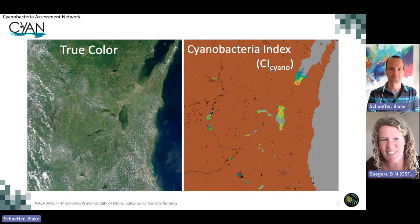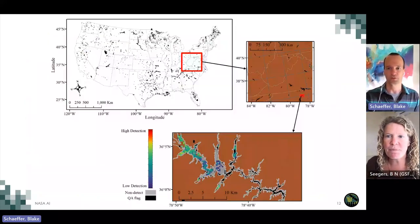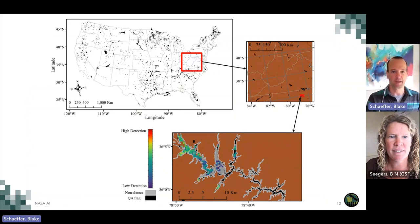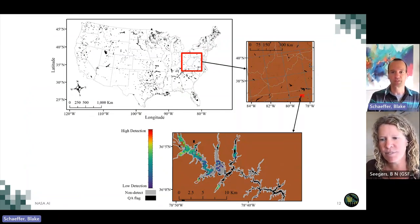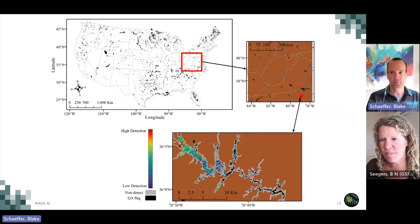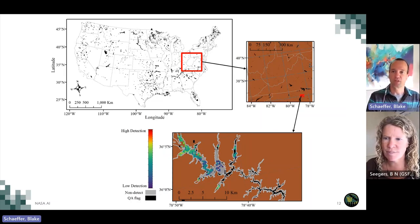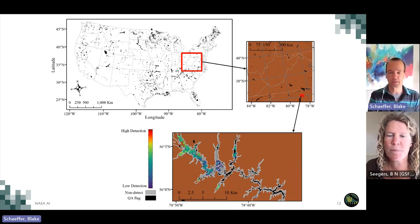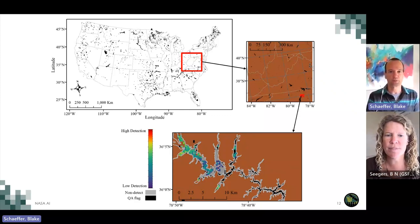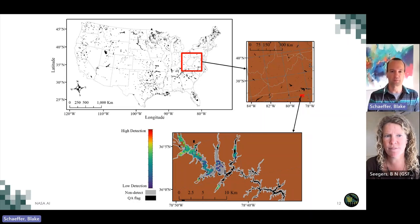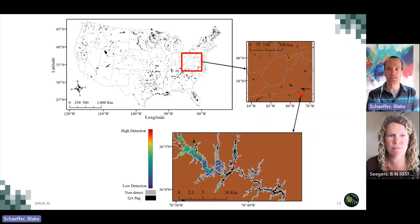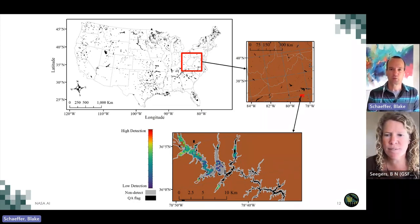On the left is what we call a true color image — this is from the satellite, and it looks a lot like something you might take with a camera. But on the right, we took the data from the satellite that measured the different colors or wavelengths of light and put those numbers into a math equation which allowed us to estimate the cyanobacteria in the water. That equation is called the cyanobacteria index, and we can do this for all those larger lakes across the U.S. The brown pixels represent land; cooler colors like purple and blue indicate low amounts of cyanobacteria, and warmer colors like yellow and orange indicate higher amounts.